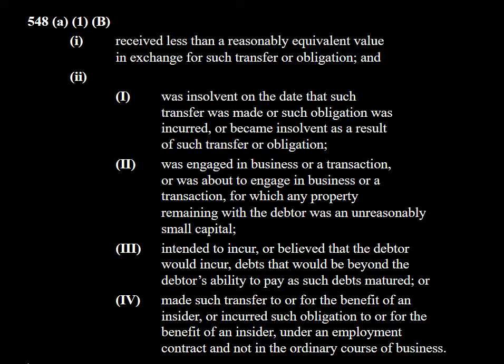I'm actually going to start with 548A1B — not A. A is actual fraudulent conveyance and B is constructive fraudulent conveyance. Constructive fraudulent conveyance is really where most of the litigation happens and where most of my focus is spent, but I'll be going into actual fraudulent conveyance as well later.